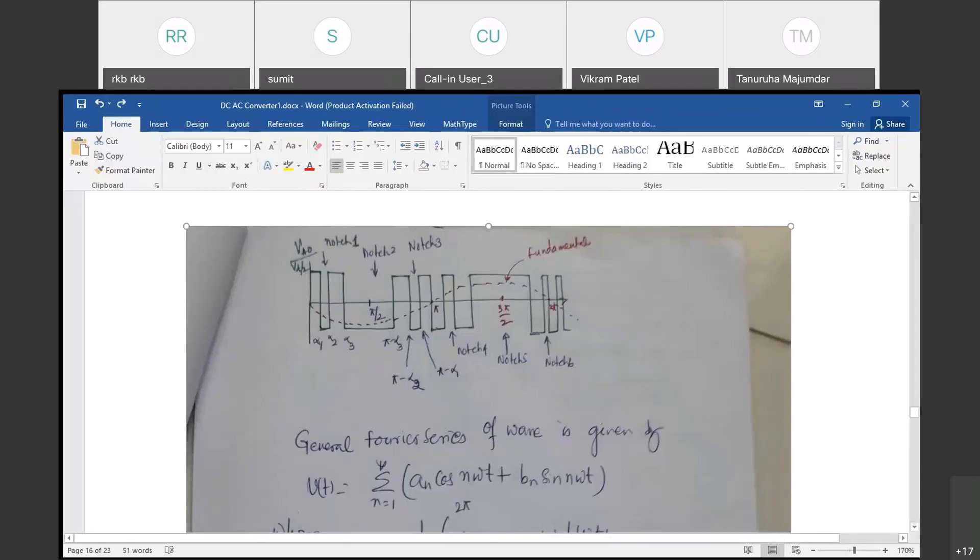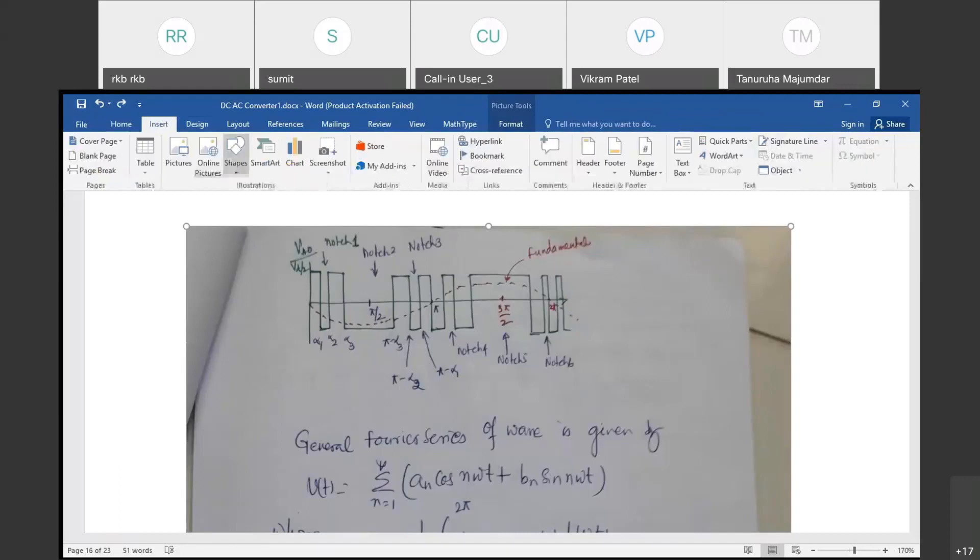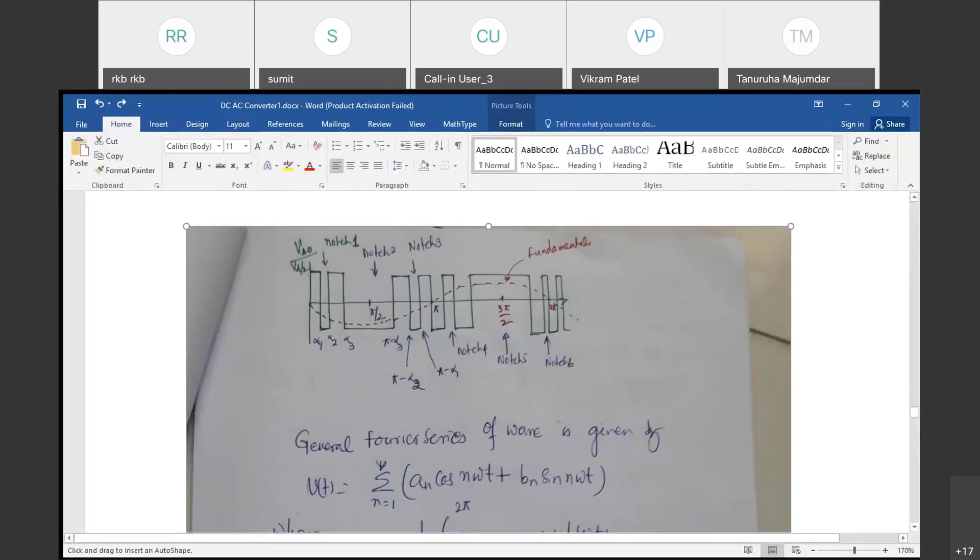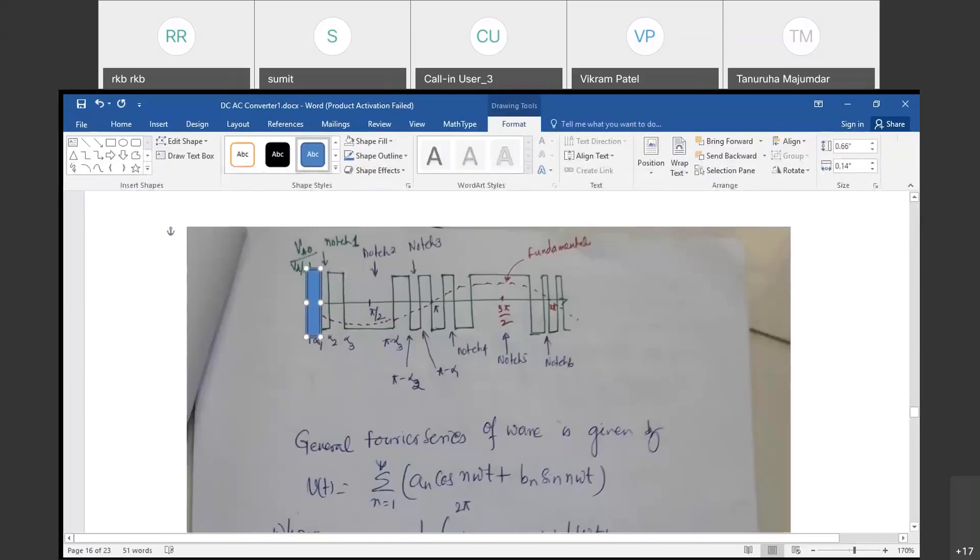This is a plus minus pulsed waveform. It has plus and both minus. You can see that this one, you are having both plus and minus. It is bipolar, plus Vdc and minus Vdc like this.